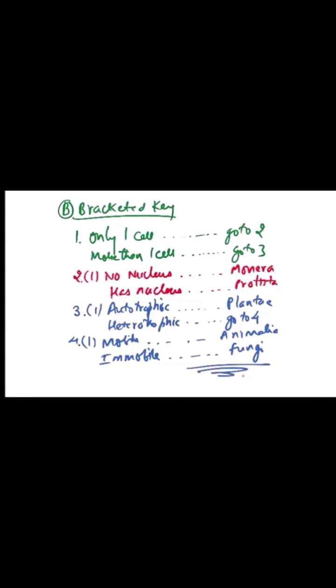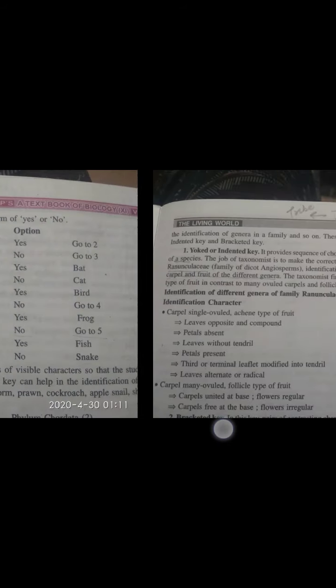A key is a set of characters that helps you recognize an organism. For example, to identify a bat, the key characters are: presence of mammary glands, external ears (pinna), and wings. For fish, the key characters are: absence of mammary glands, pinna, and limbs, but presence of gills and scales.